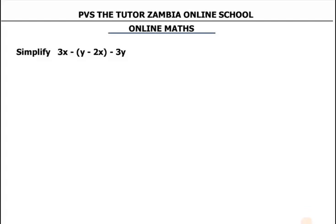Hello, this is the tutor. I have another question here which we need to simplify. What we do here is: whatever is not in brackets, we keep it the way it is, then we work out whatever has brackets. So let's look at the solution.